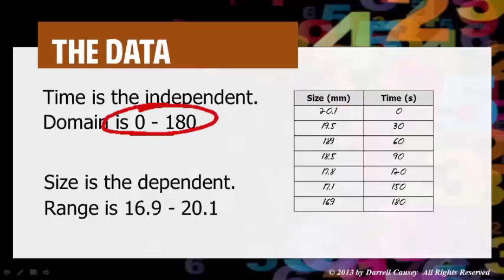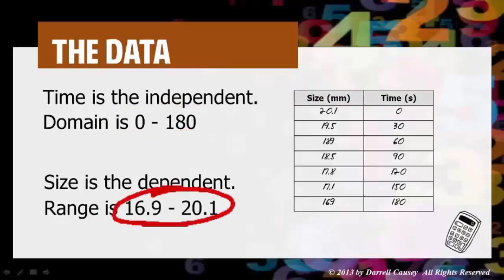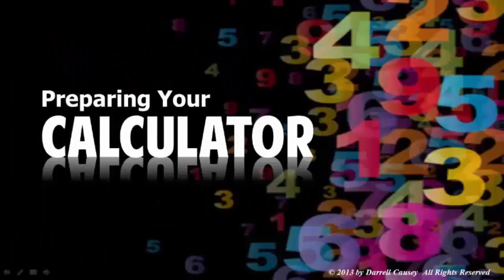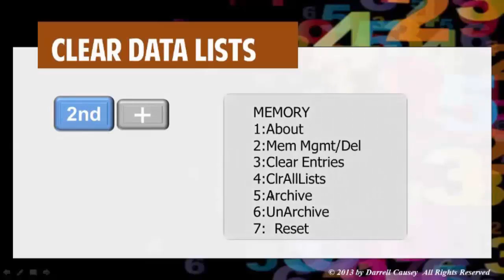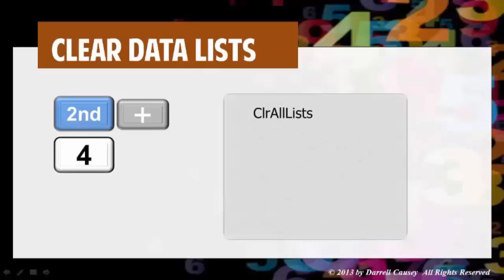So as we notice our domain and range there, we'll use those values to set up our graph. Now preparing your calculator. Clear your data list by pushing 2nd plus and then going down to 4, it says clear all list, then push enter and you're done. All your lists should be cleared.